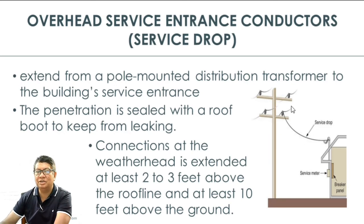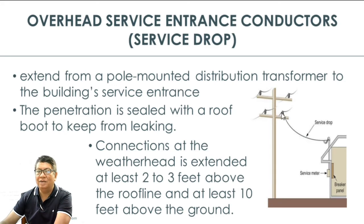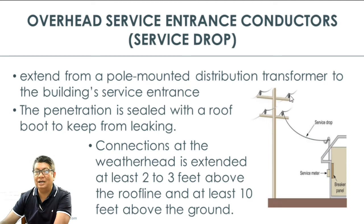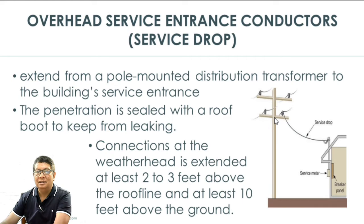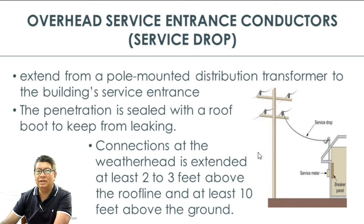The conductors below are the secondary, which have already passed through the distribution transformer. The lines at the top of the pole carry the primary lines at 13,800 volts, while below it is already 220–230 volts — the secondary. The penetration is sealed to keep out leaking. The connection at the weather head is extended at least 2 to 3 feet above the roof line and at least 10 feet above the ground.